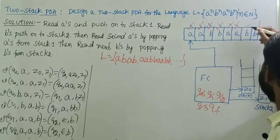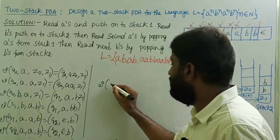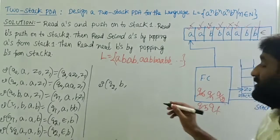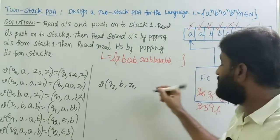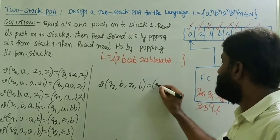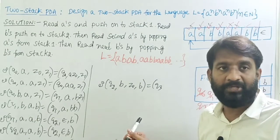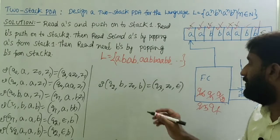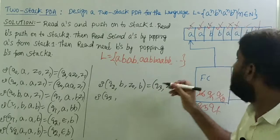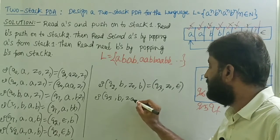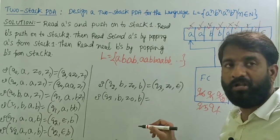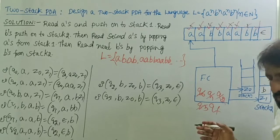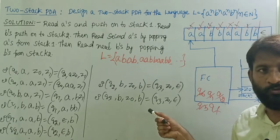Now the second b's are starting. Transition of q2 with input 'b': after all a's are completed, top of stack one is z0, top of stack two is 'b'. Move from q2 to q3 by doing a pop operation on stack two. That is: δ(q2, b, z0, b) = (q3, z0, ε) — 'b' is removed from stack two. Then transition of q3 with input 'b': top of stack one is z0, top of stack two is 'b' — do the pop operation on stack two. That is: δ(q3, b, z0, b) = (q3, z0, ε). If there are more b's, use the same transition.